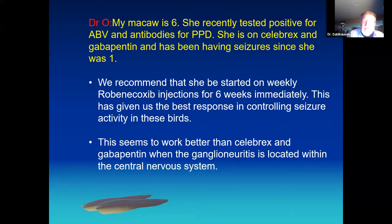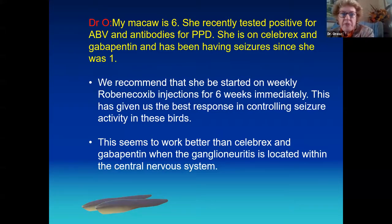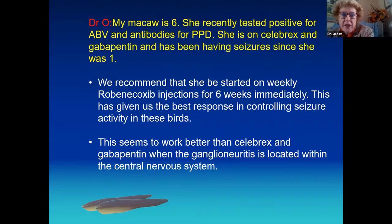Q: A macaw tested positive for bornavirus and AGAA antibodies and has been on Celebrex and gabapentin since age one with seizures — she is now six. Consider the timing of seizures relative to hormonal cycles: macaws typically have hormonal activity in July and again November through January/February. Keeping hormones suppressed with Deslorelin or Lupron during those periods, combined with robenacoxib, would be a better approach. If gabapentin is not controlling seizures adequately, consider adding Keppra.